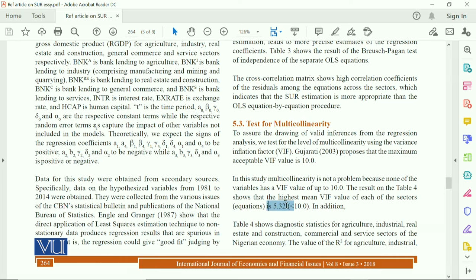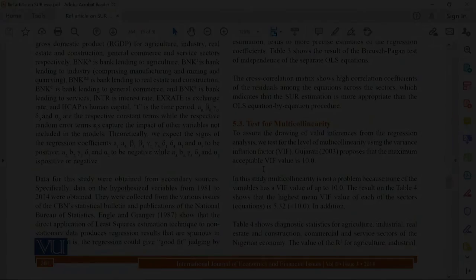And in this model, the VIF value is only 5.32, which is less than 10, which shows that yes, there is no multicollinearity in the model. So, you can see that in these tests, whether your estimation is reliable or not.